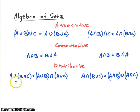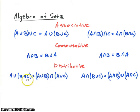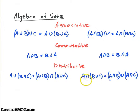The distributive property: we have A union (B intersect C). We can distribute the union so we first do A union B, then intersect it with A union C. Similarly, reversing union and intersect, we have A intersect (B union C), which distributes to (A intersect B) union (A intersect C).